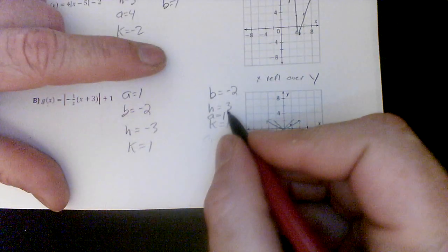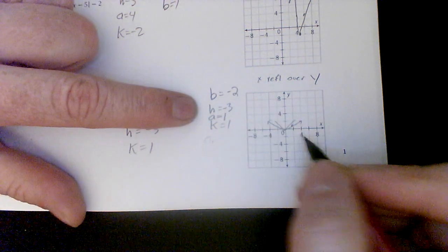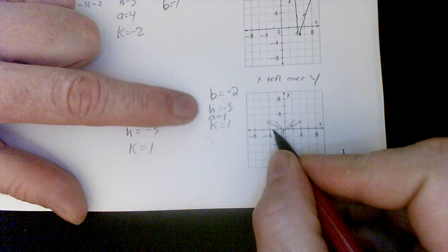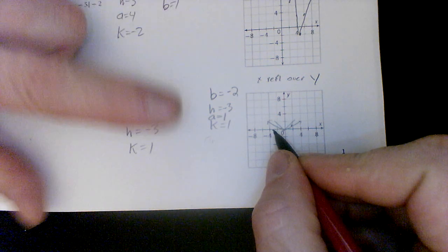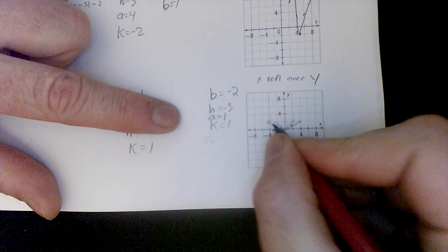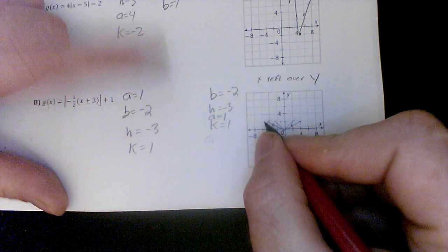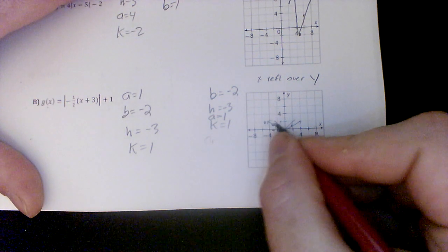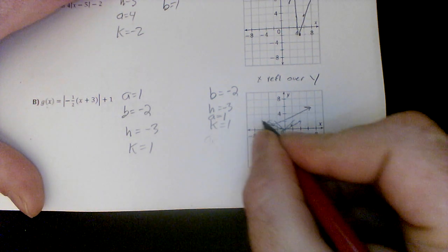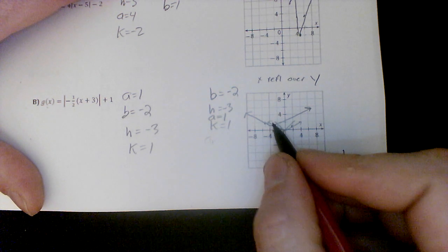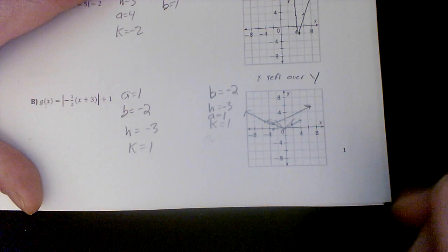Then I should have listed this h here as a negative 3 over here. And then the h says go over 3. So my vertex goes here, still horizontally stretched. And then my k says go up 1. So I'm right here. But over 2, up 1. Over 2, up 1. And I'm just going to check my work to make sure I did this correct. So this should be h, k, up 1 over 2. We're good.